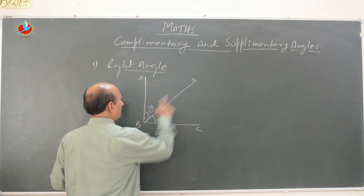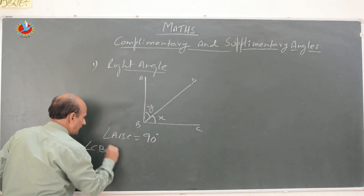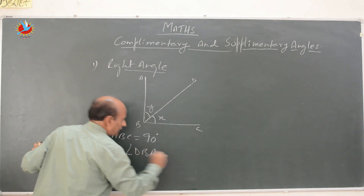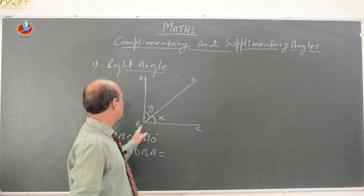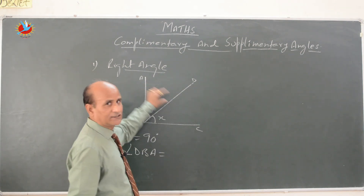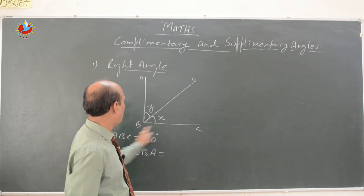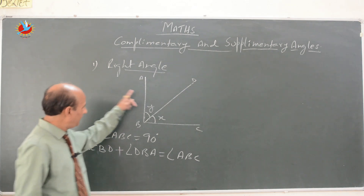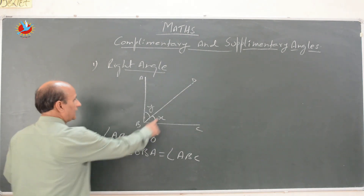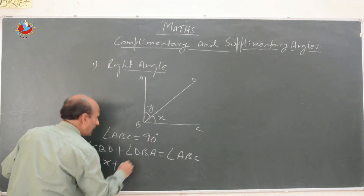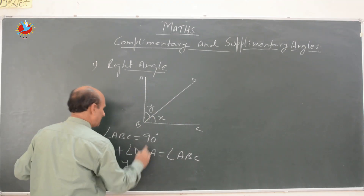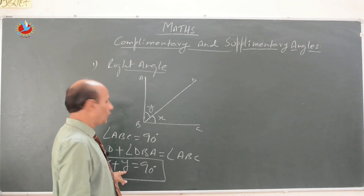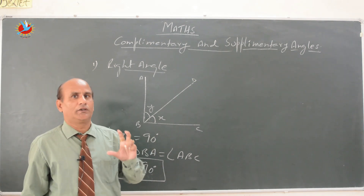Angle CBD plus angle DBA must equal angle ABC, which is 90 degrees. So X plus Y equals 90 degrees. If we divide 90 degrees into two parts, then the sum of the parts must be equal to 90 degrees.